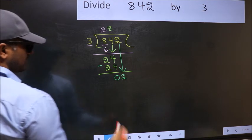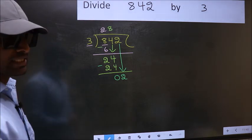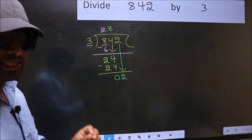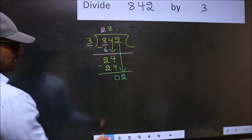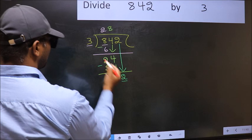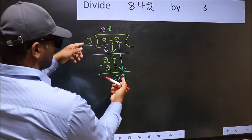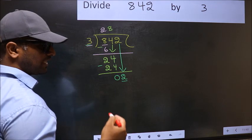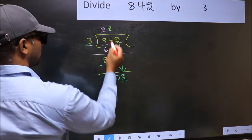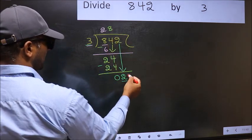After this step, the mistake happens. And the mistake is this. Here we have 2 and here 3. 2 is smaller than 3. So what many do is, they directly put a dot and take 0.